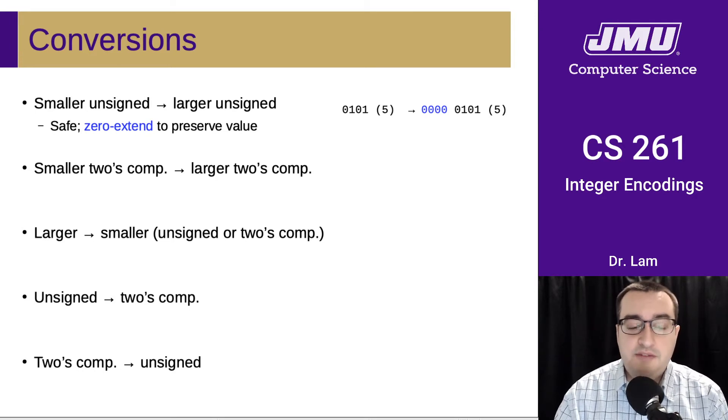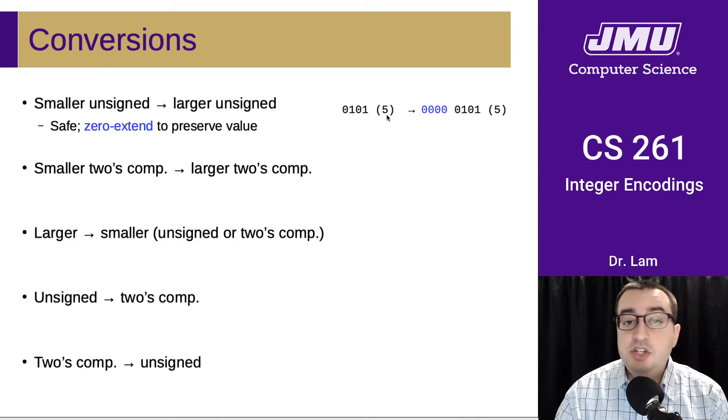So if, for instance, we were taking a value that can be represented using four bits in unsigned representation, so for instance five, we can change that to an eight-bit representation simply by adding zeros at the end.